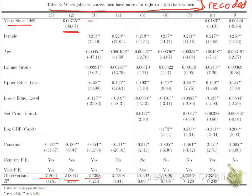Specification 3 then starts including a dummy variable for female. What we see is that if you are female, you're 0.21 higher on this index. We don't know exactly how this index is scaled, so we're not going to worry about the units, but simply: when you're female, you're more likely to agree that jobs should be gender equal.